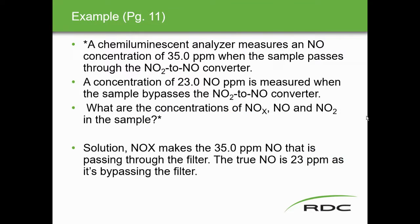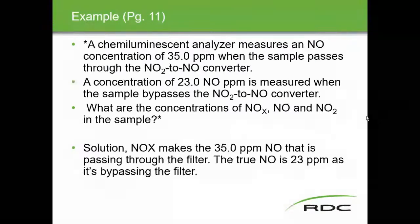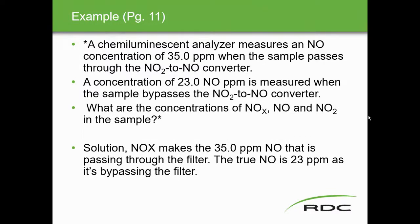Here's a worked example: a chemiluminescent analyzer measures an NO concentration of 35 ppm when the sample passes through the NO2-to-NO converter (NOx mode), and 23 ppm NO when the sample bypasses the converter (NO mode). Therefore: NOx (35 ppm) minus NO (23 ppm) equals NO2 (12 ppm). This is just a simple subtraction equation, shown on page 11 of the notes.